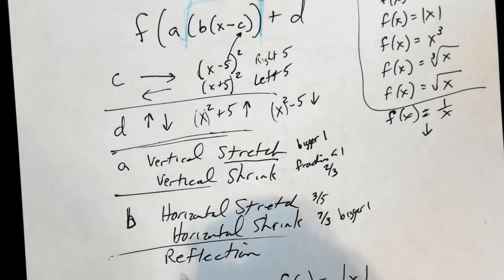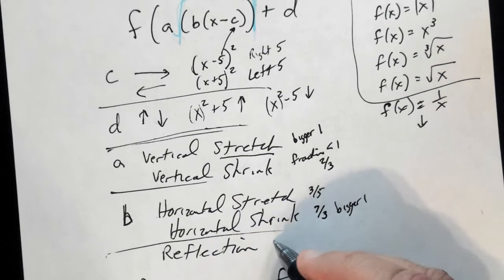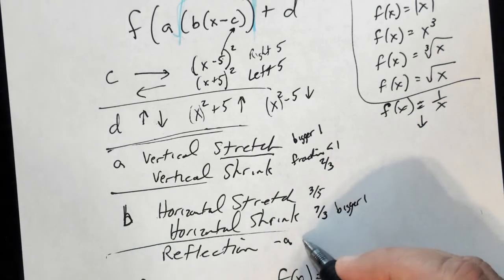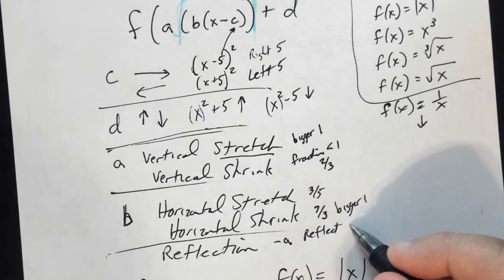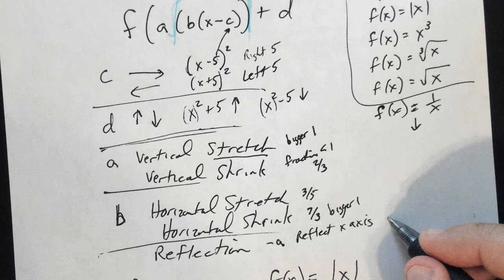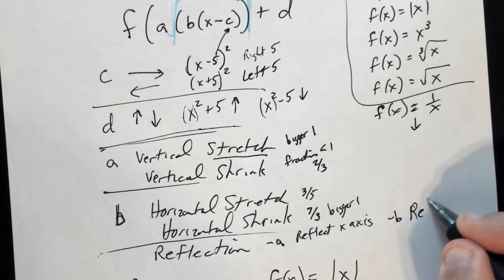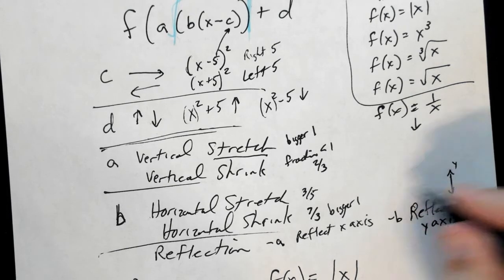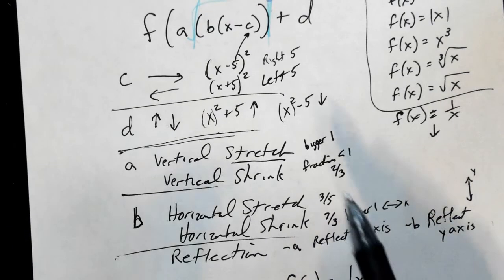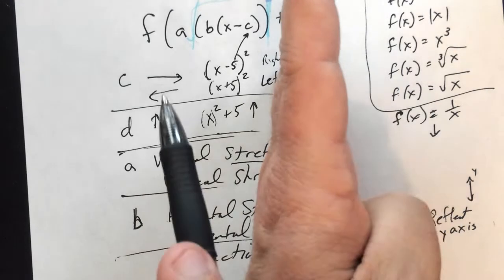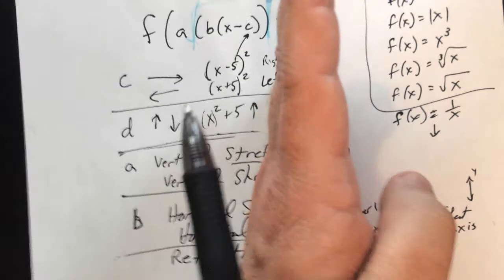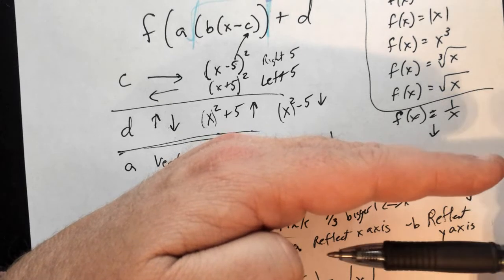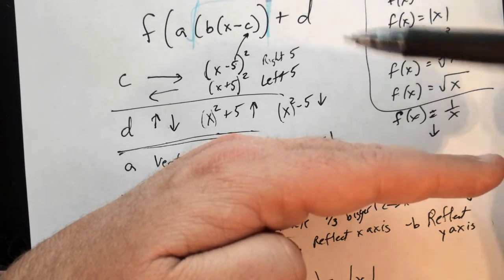You also have reflections. If A is negative, it reflects across the x-axis — what's above goes below. If B is negative, it reflects over the y-axis — what's on the left goes to the right. If you graph those you'll be able to see them clearly.